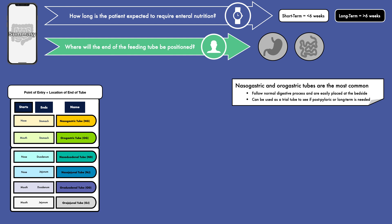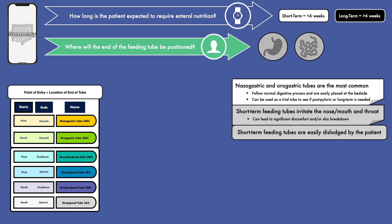A disadvantage of all short-term feeding tubes is they irritate the nose, mouth, and throat, and can therefore lead to significant discomfort and or skin breakdown. Another disadvantage is that they are easily dislodged by the patient, both intentionally and unintentionally, leading to delays in feeding and the use of valuable time.